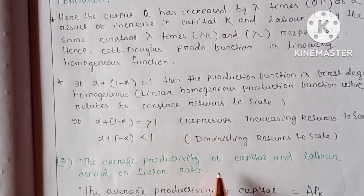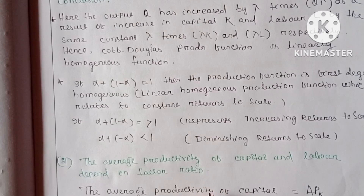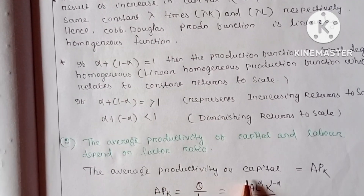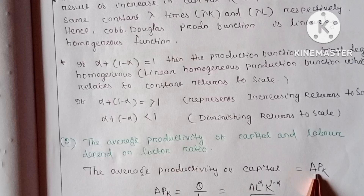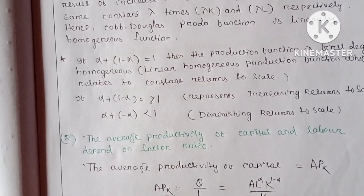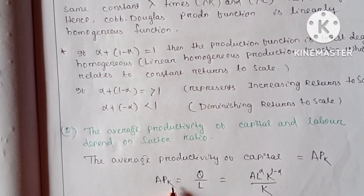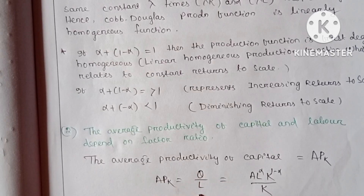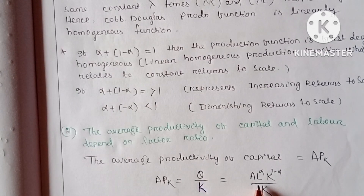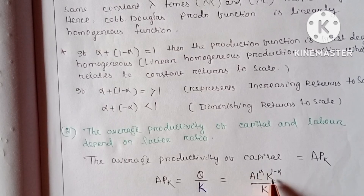The next property is that the average productivity of capital and labor depend on the factor ratio. The average productivity of capital, APK, equals Q divided by K. So we substitute the value of Q: APK equals A into L to the power alpha into K to the power 1 minus alpha, divided by K.